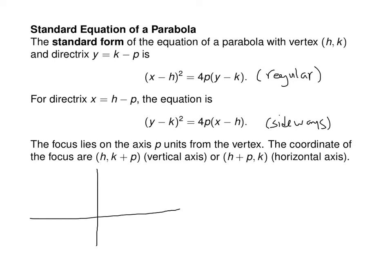Starting with a parabola with vertex at (0, 0): the directrix will be p units down at y equals −p, and the focus is p units up at coordinates (0, p).